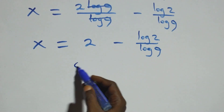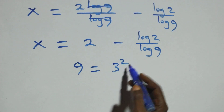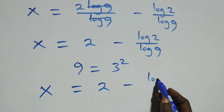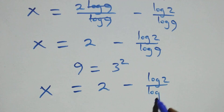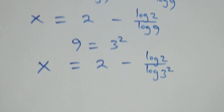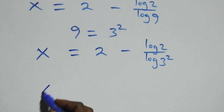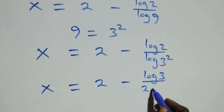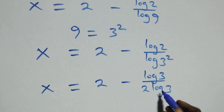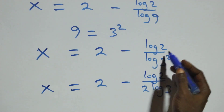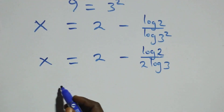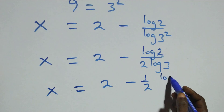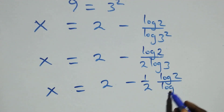We can write 9 as 3 squared, so log 9 becomes log 3 squared, which equals 2 log 3. This gives x equals 2 minus log 2 over 2 log 3. We can also write this as x equals 2 minus 1 over 2 times log 2 over log 3.